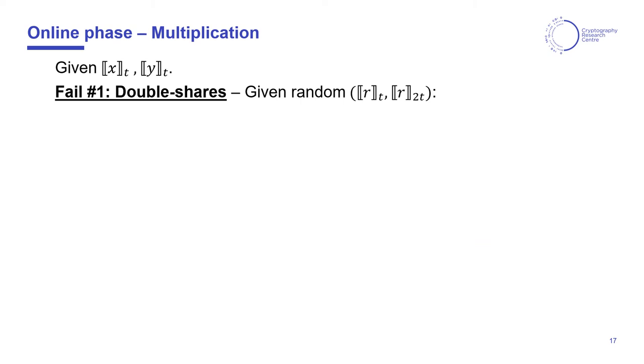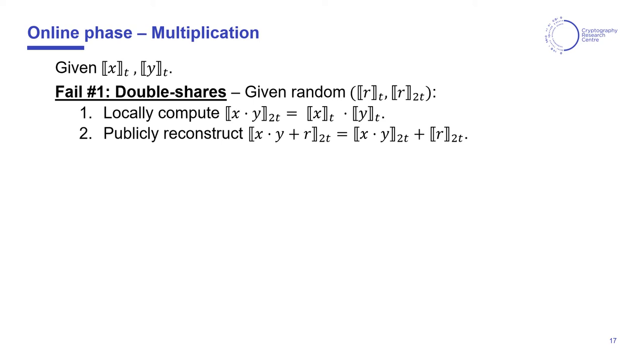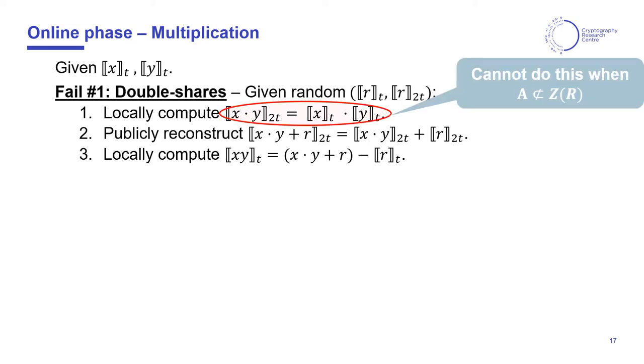Let's review some standard protocols for multiplying secret shared values x and y. The first one uses double shares, which are sharings of the same random value r, using a degree t and a degree 2t polynomial. Due to the multiplicative property, parties can locally compute a degree 2t sharing of x times y from their degree t shares of x and y. Using the degree 2t sharing of r as a mask, they can reconstruct x times y plus r, and from that they obtain a degree t sharing of x times y using the remaining share. This approach will fail unless the evaluation points are contained in the center of the ring, since that is needed for polynomial evaluation to be a ring homomorphism when we are in a non-commutative ring.